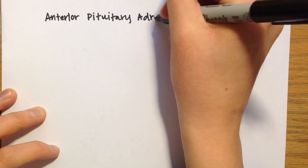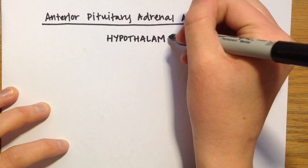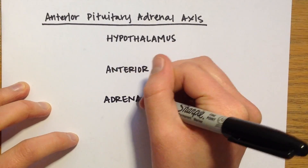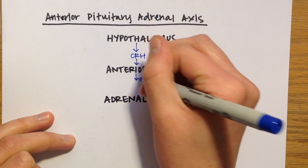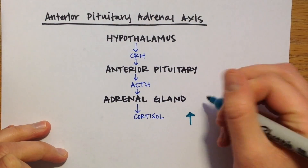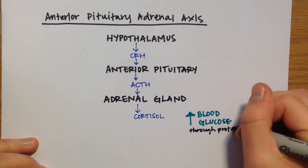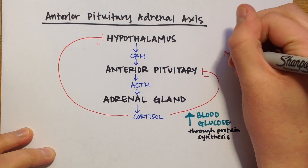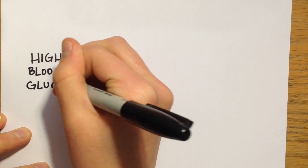Now let's move through the anterior pituitary-adrenal axis. This focuses on one specific pathway that regulates blood glucose levels through hormone control. In this pathway, corticotropin-releasing hormone is released from the hypothalamus of the brain and stimulates the release of adrenocorticotropic hormone from the anterior pituitary gland. This hormone will stimulate the release of cortisol from the adrenal cortex, which will then in turn help increase blood glucose through protein breakdown and gluconeogenesis. It is important to note that the increase of cortisol creates a negative feedback loop by repressing the activity of the earlier parts of the pathway.